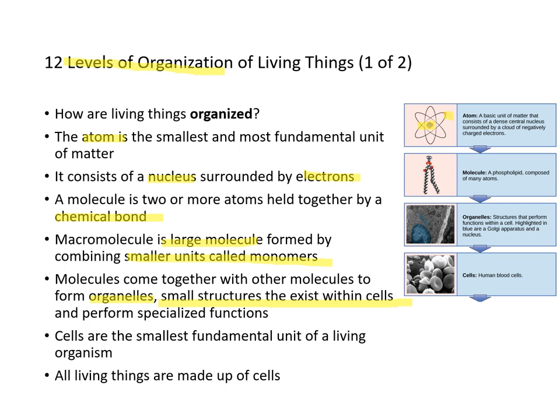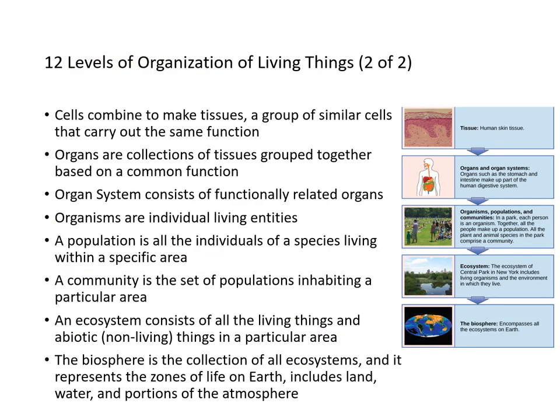Cells that possess organelles are the smallest fundamental unit of a living organism — this is why we have single-celled organisms. All living things are made up of cells. Cells combine to make tissue; tissues are groups of similar cells that carry out the same functions.